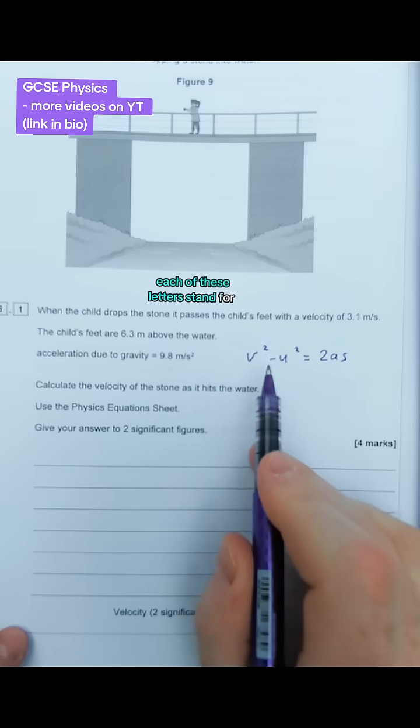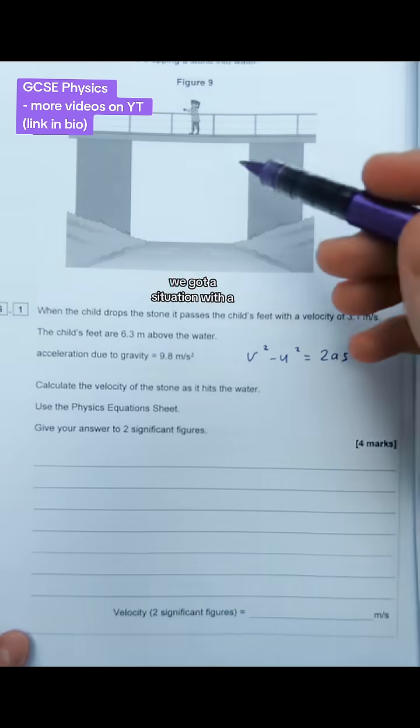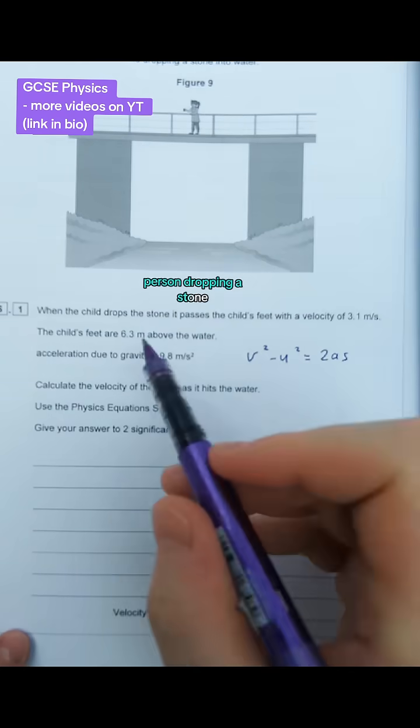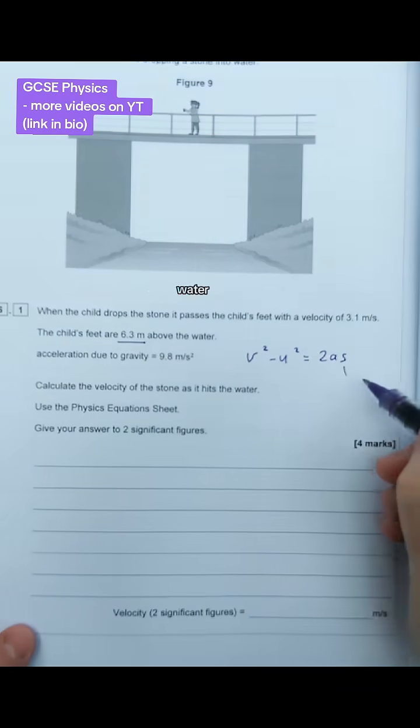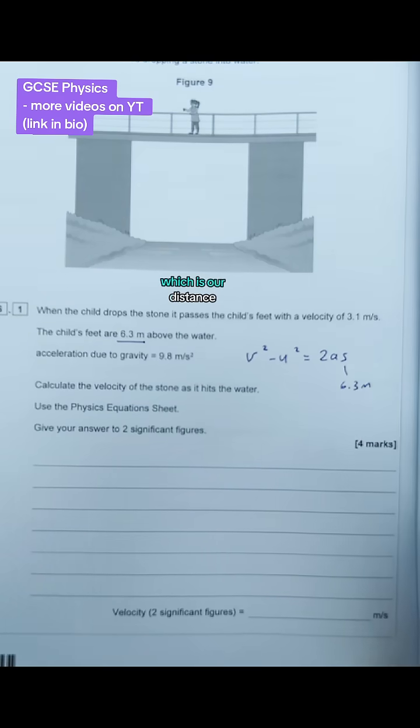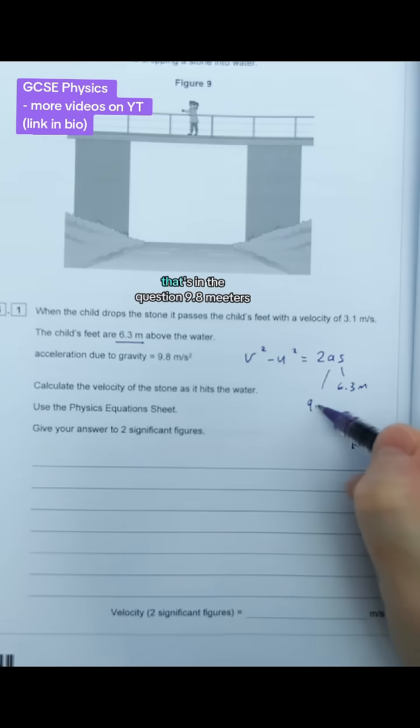We're going to learn what each letter stands for in this equation. First, we've got a situation with a person dropping a stone. The easiest bit is this: their feet are 6.3 meters above the water. That's given by s, which is our distance. A stands for acceleration. That's in the question, 9.8 meters per second squared.